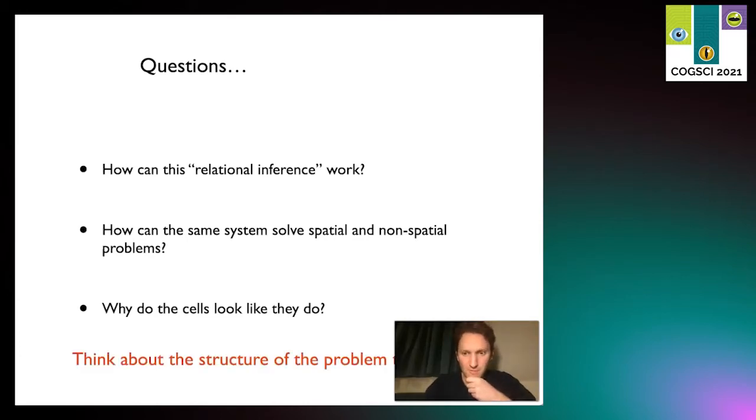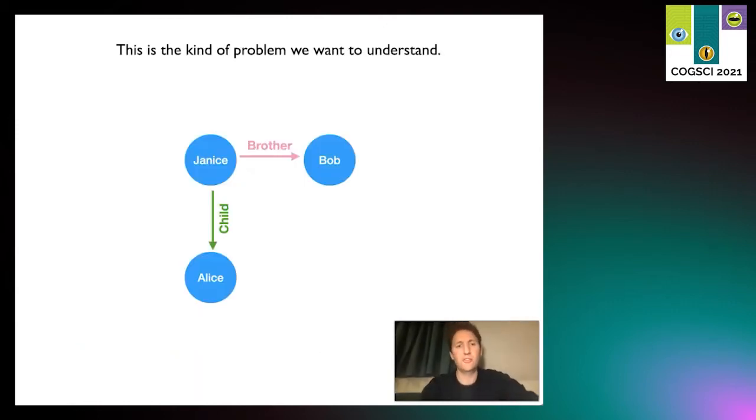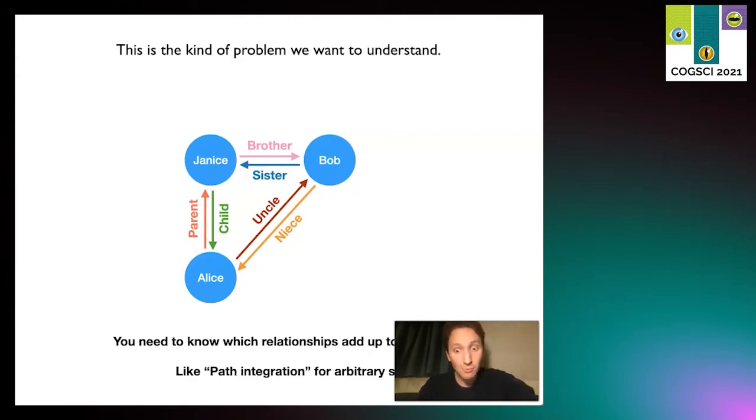To start answering this question, we're going to think about what problem the brain is solving. If I told you that Bob is Janice's brother and Alice is Janice's child, I've only given you two bits of information, but you're actually able to tell me an awful lot more. You can tell me that Bob is Alice's uncle and Alice is Bob's niece, because you've understood something about what a family tree is. You've understood how relationships add up with each other - you know that parent plus brother is uncle.